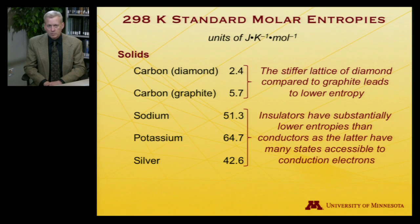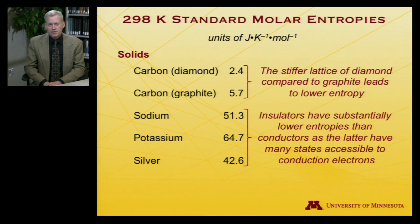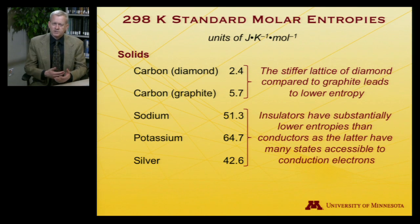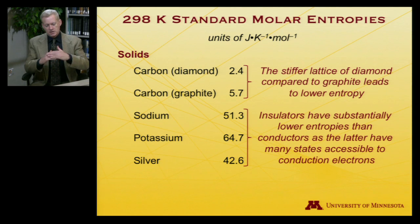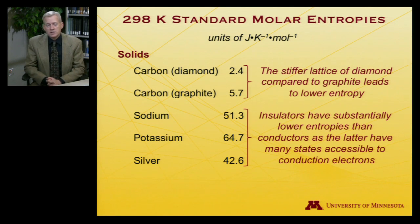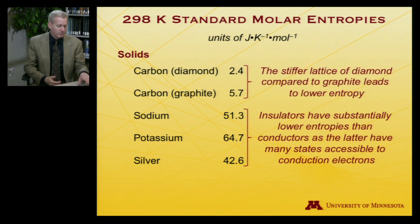The metals differ from carbon insofar as they are conductors as opposed to insulators. In conductors, there are accessible states to the electrons — a conductor allows electrons to flow, and those electrons can access states that are continuously available. That contributes to the entropy of conducting metals, so they have higher values.